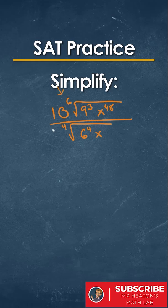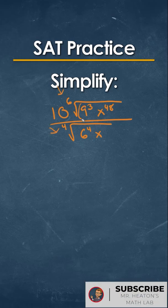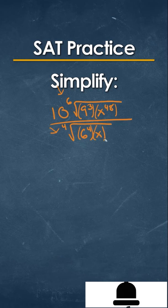To be able to simplify, we're going to take this 6th root and this 4th root and we're going to combine them to each individual component to simplify it out and make it a little bit easier.